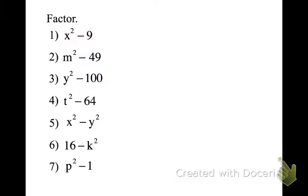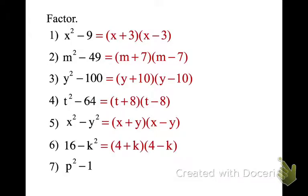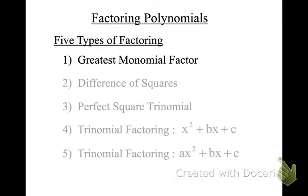Now let's check our work. The next one you should have had y minus 10, y plus 10, then t plus 8, t minus 8. Then x minus y, x plus y. Keep it in the order that the binomial comes in. Don't just turn it into standard form. The square root of 16 is 4, so 4 plus k and 4 minus k. The next one is going to be p plus 1, p minus 1. I usually like to put my p minus 1 to the outside because we're going to keep building on this.